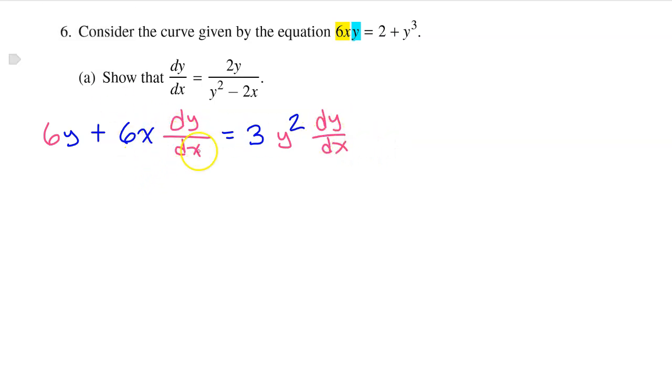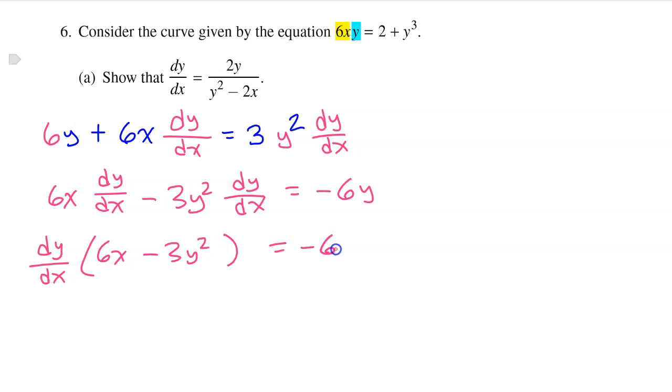We need to get all the dy/dx terms on the left side of the equation, and anything else will be on the right-hand side. So this term can stay on the left-hand side. So I'm just going to bring down 6x dy/dx. Now I'm going to subtract this term from both sides, so I will have minus 3y² dy/dx. And I will subtract 6y from both sides, so we will have negative 6y on the other side. We put these together on one side, so that we can factor out the dy/dx. So we will put dy/dx out in front of parentheses, and that's going to leave behind 6x minus 3y² equals negative 6y.